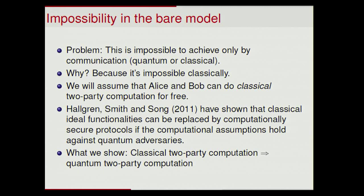As you might expect, this is impossible just by communication. Why do we know this? Because we know it's impossible classically. And since any classical circuit can be represented as a quantum circuit, this impossibility result carries over to the quantum world. So we'll have to assume something to be able to do this. And what we'll assume is that Alice and Bob can do classical two-party computation for free — basically, they have access to an ideal classical functionality that does arbitrary two-party computation.